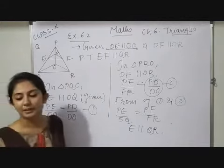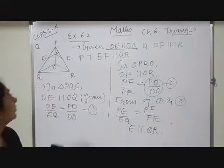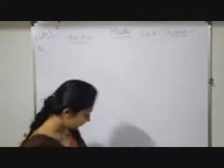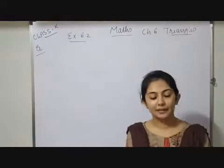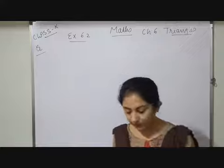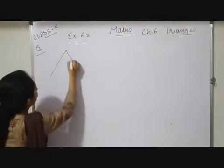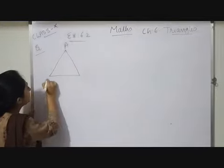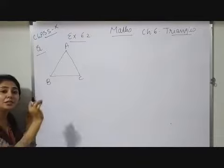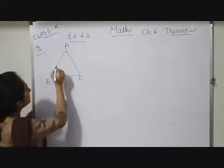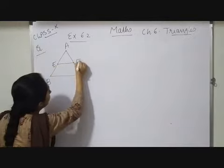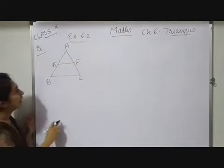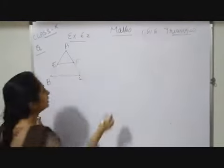Next question I am explaining here. Prove that the line joining the midpoints of any two sides of a triangle is parallel to the third side. Let me draw a triangle and name it ABC. The line joining the midpoints of two sides intersects at points E and F, and I have to prove that EF parallel BC.